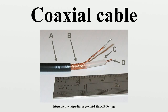This property makes coaxial cable a good choice for carrying weak signals that cannot tolerate interference from the environment, or for stronger electrical signals that must not be allowed to radiate or couple into adjacent structures or circuits. Common applications include video and CATV distribution, RF and microwave transmission, and computer and instrumentation data connections. Many conventional coaxial cables use braided copper wire forming the shield. This allows the cable to be flexible, but it also means there are gaps in the shield layer, and the inner dimension of the shield varies slightly because the braid cannot be flat.